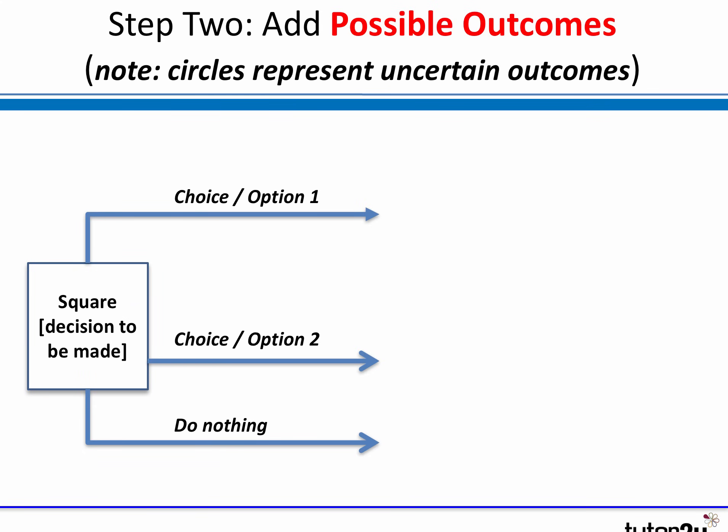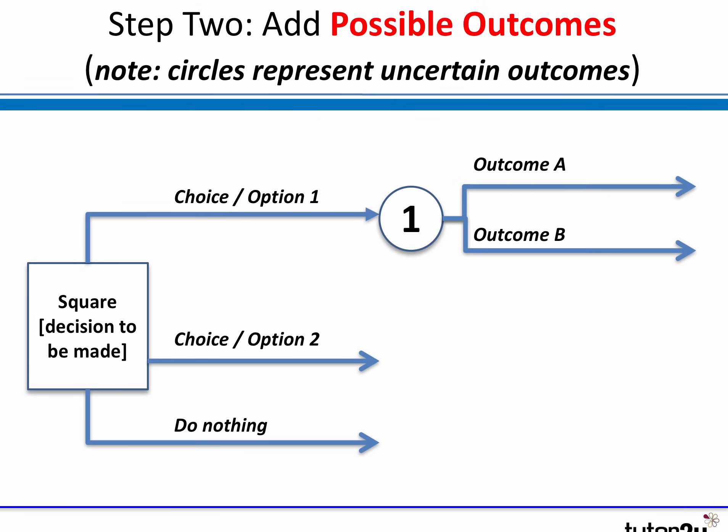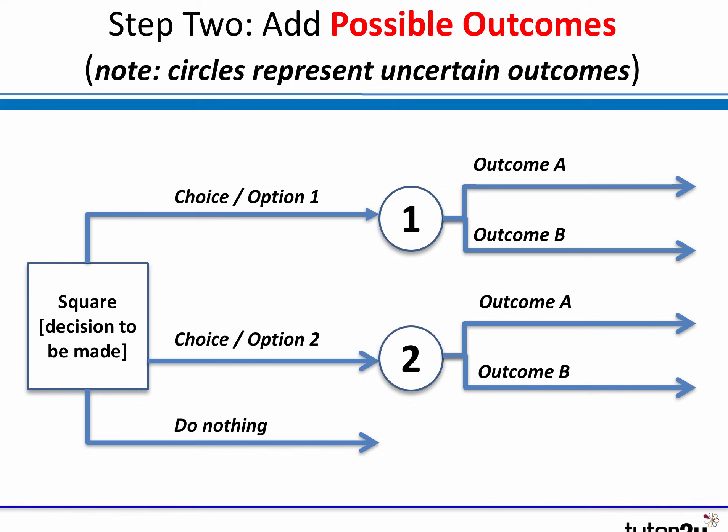Step two, we add possible outcomes. Typically you'll be given two possible outcomes for each choice. Circles in a decision tree represent the uncertain outcomes, the possible outcomes. So for option one we've got two possible outcomes, outcome A and outcome B. For option two we've also got two possible outcomes, outcome A and outcome B. And of course, if you do nothing, there'll be no outcome.